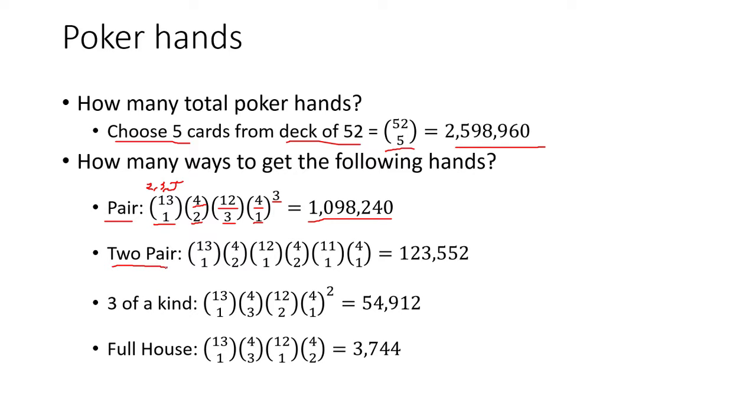Likewise, we do the same computation with the 2 pair. We first choose the rank of our first pair and then choose suits for each one of those cards. And then we choose the rank of our second pair and then choose a suit for each one of those cards. And then we choose one more rank for the remaining card out of 11. And keep in mind that this number decreases each time because we've already used a rank in the previous pair. And that gets us around 123,000.